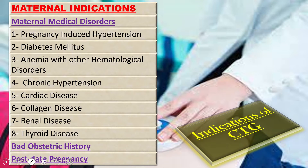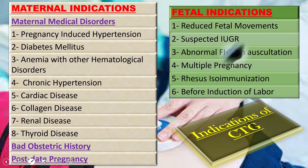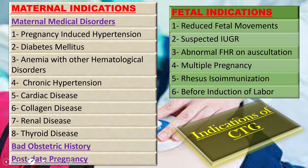Among the fetal indications, we include reduced fetal movement, suspected IUGR, abnormal fetal heart rate on auscultation, multiple pregnancy, rhesus isoimmunization, and we also do CTG before induction of labor.